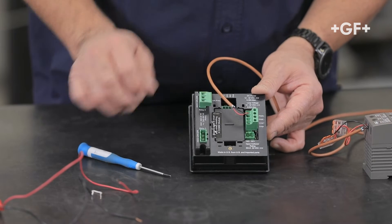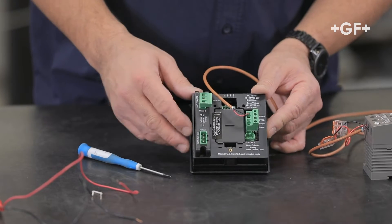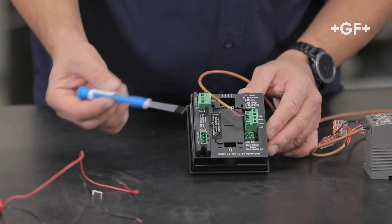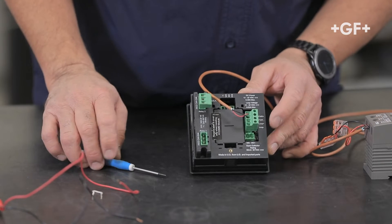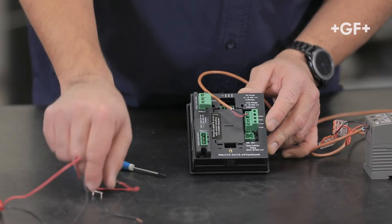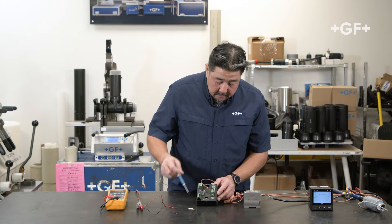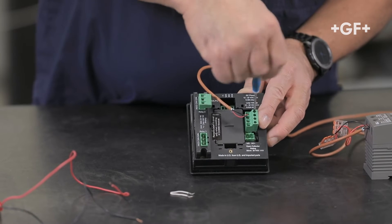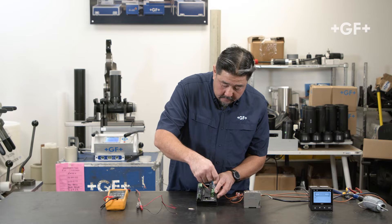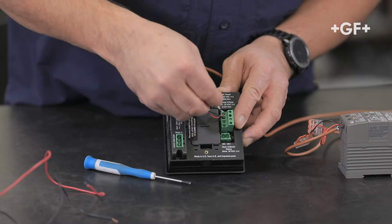Since this is a passive device, I'm going to need to provide power to the loop, and I'm going to do that by taking a jumper wire from power plus over to loop plus. I have a jumper I made earlier.